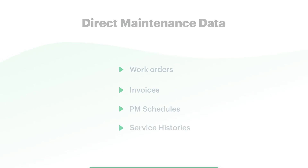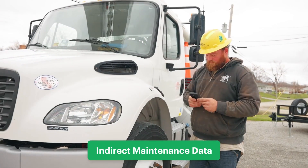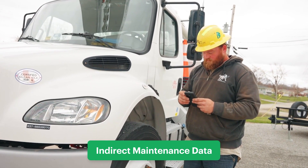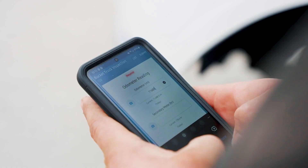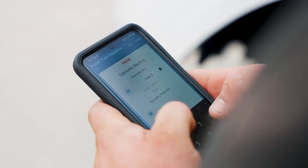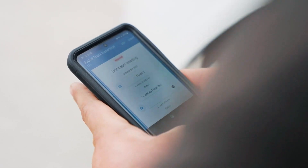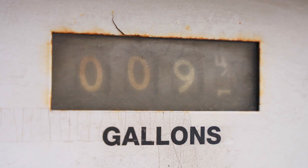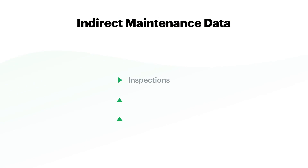The second is indirect maintenance data. This will be found on sources that don't directly relate to vehicle service, but instead indicate external factors that might affect a vehicle's health, including inspections, fuel usage, and other non-maintenance related sources.